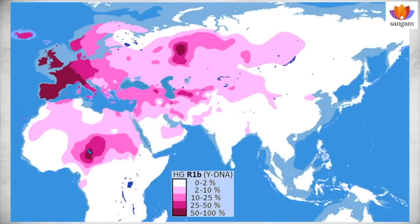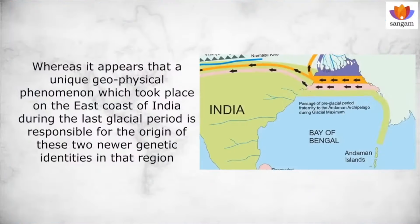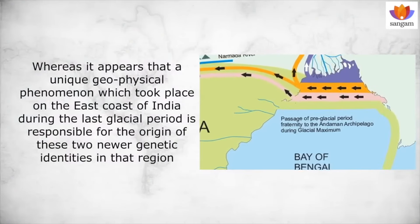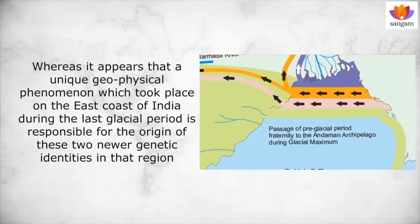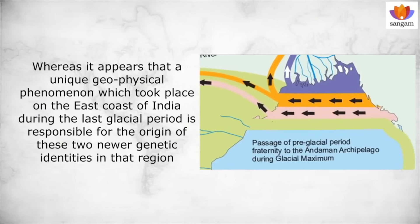Presently, it is believed that R1-alpha and R1-Bravo haplogroups in Y chromosome both originated in Eastern Europe near the European Steppe and Anatolia region. Whereas, it appears that a unique geophysical phenomena which took place on the east coast of India during the last glacial period is responsible for the origin of these two newer genetic identities in that region.